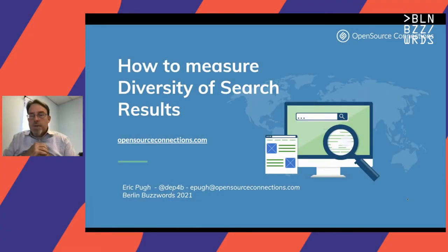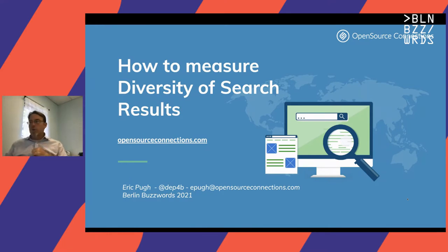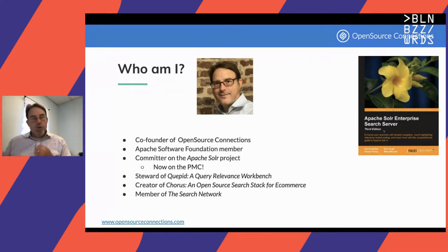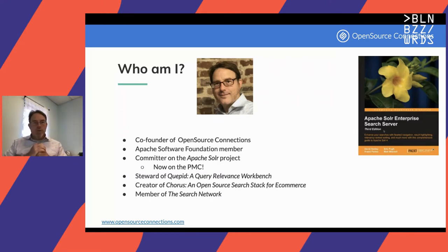Super excited to be here. I think this is my third Berlin Buzzwords, so looking forward to seeing everybody in person the next time around. Today I'm going to talk about how to measure diversity of your search results. I'm one of the co-founders of Open Source Connections, been involved in search for a long time, steward a couple of open source projects around improving search quality, and super excited that I joined the Apache Solr PMC this year.